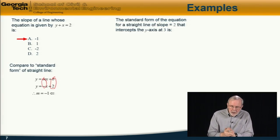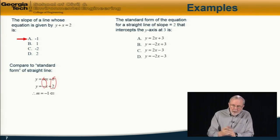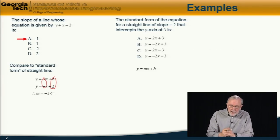Next question: the standard form of the equation of a straight line which has a slope of 2 that intersects the y-axis at 3 is which of these alternatives? So, in this case, we start from the standard form here, y = mx + b.